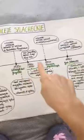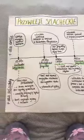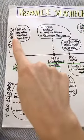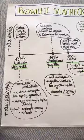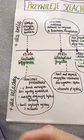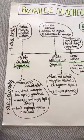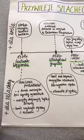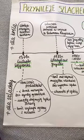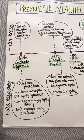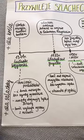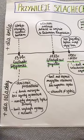Zrobiłam dla Was oś czasu praw szlacheckich – praw, które otrzymali najpierw rycerze, potem szlachta w różnych sytuacjach. Na górze pokazałam, jakie korzyści miał król z nadania przywilejów, a na dole jakie korzyści miała szlachta. Początek przypisuję się Ludwikowi Węgierskiemu, który pochodził z dynastii Andegawenów z Węgier. Po sojuszu Kazimierza Wielkiego z Węgrami mamy Węgrów na tronie Polski.